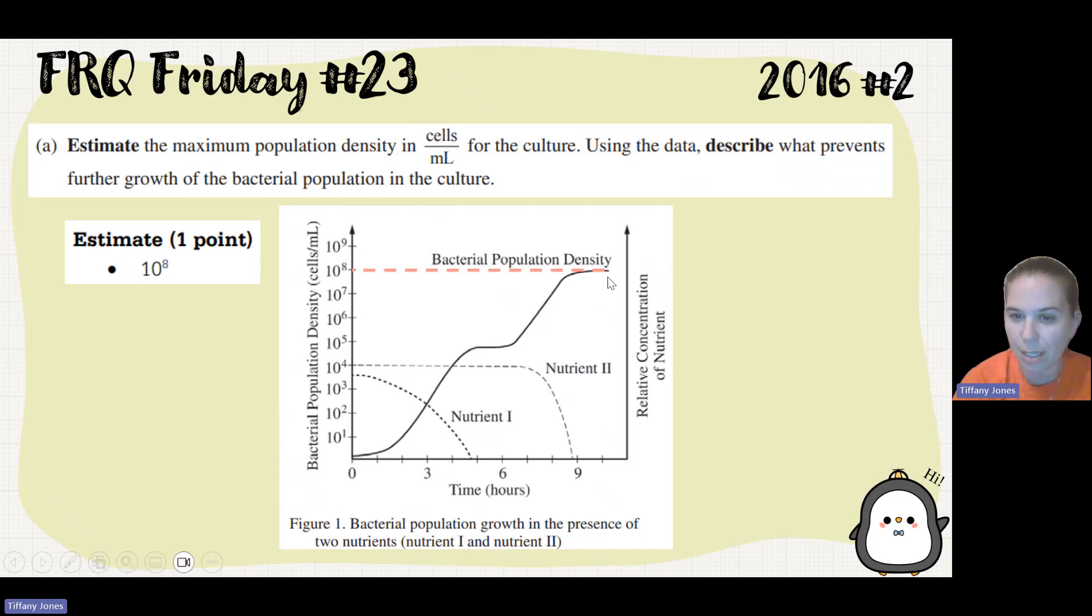Using the data, describe what prevents further growth of bacterial population in the culture. So if we look here, this is the highest. But if you drop your finger down, you'll see that there's no more nutrient one and no more nutrient two, which means that we've depleted all the nutrients. Well, if they have no nutrients, they have no food, of course the bacterial population is going to die.